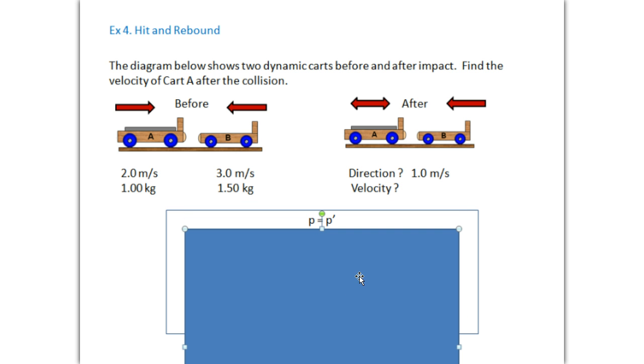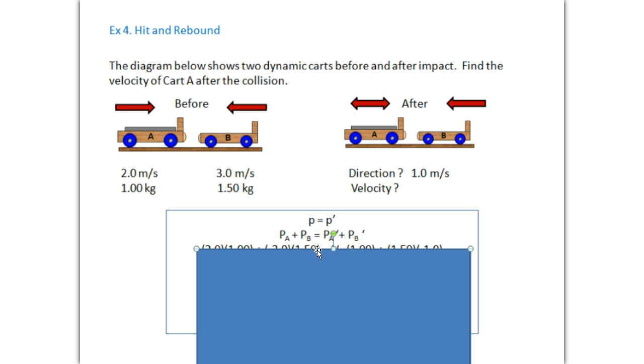So we always start with momentum before equals momentum after. And before should be momentum of cart A plus momentum of cart B. After, momentum of A plus momentum of B. And that's what we have here. So momentum of A plus B equals A plus B. And the primes, remember, show that's after the collision. Momentum is mass times velocity.